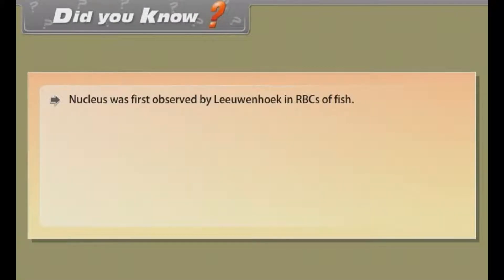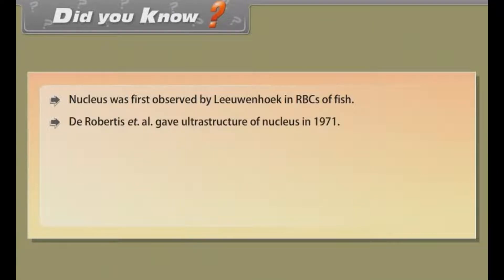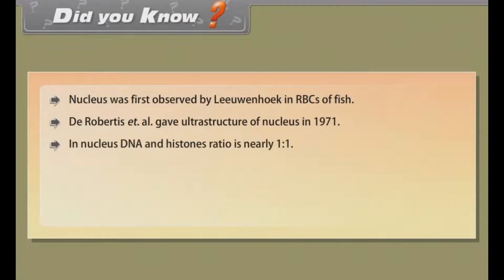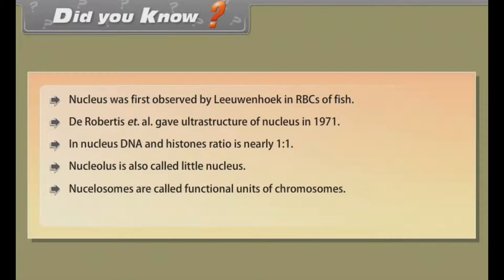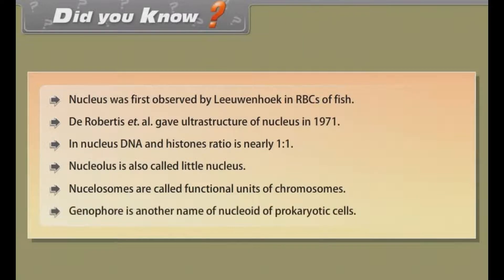Did you know? Nucleus was first observed by Leeuwenhoek in RBCs of fish. D. Robertis et al. gave the ultrastructure of nucleus in 1971. In nucleus, the DNA and histones ratio is nearly 1:1. Nucleolus is also called little nucleus. Nucleosomes are called the functional units of chromosomes. Genophore is another name for the nucleoid of prokaryotic cells.